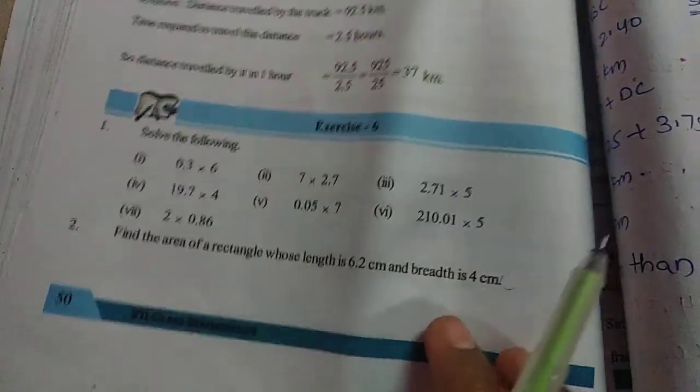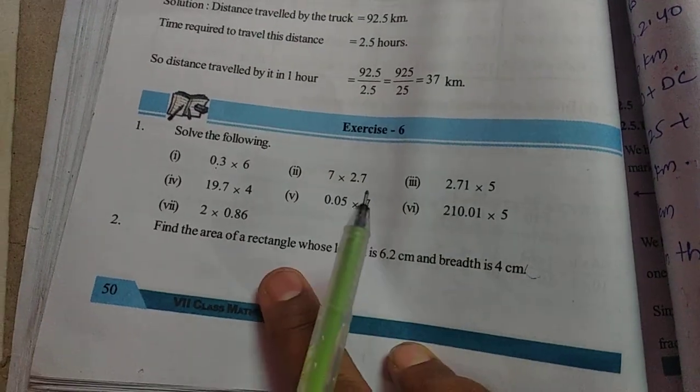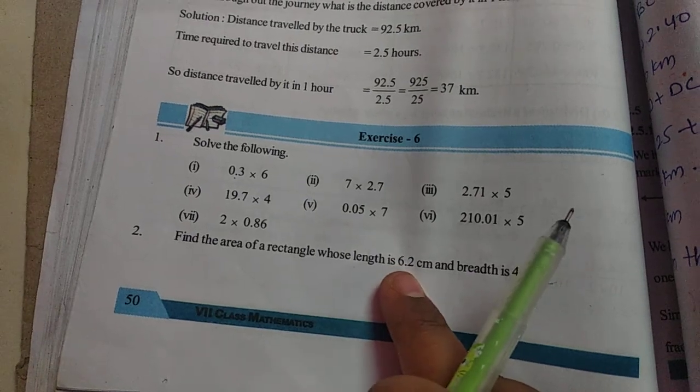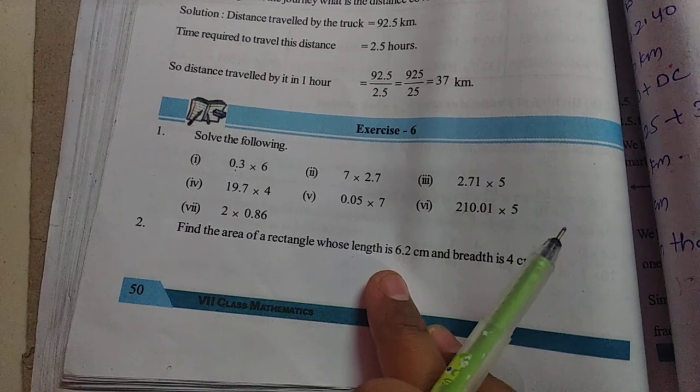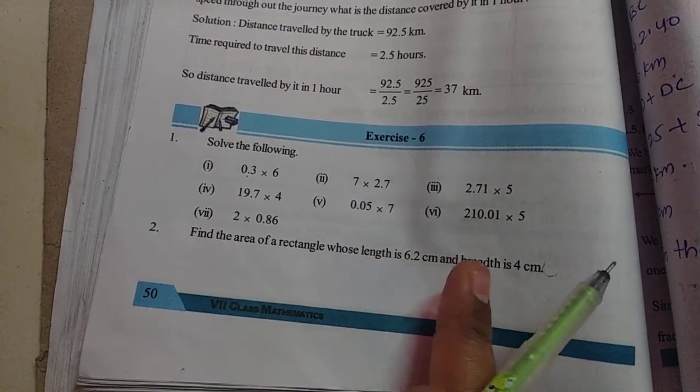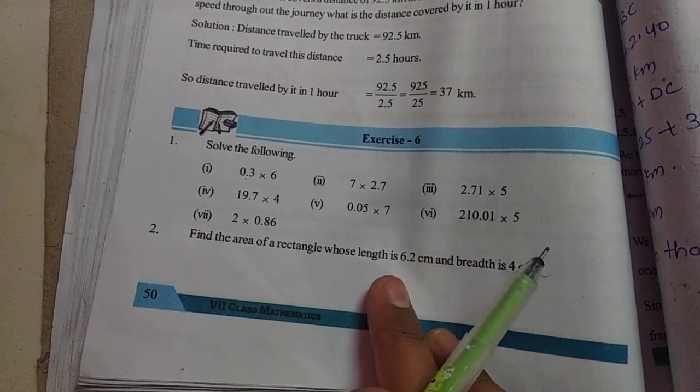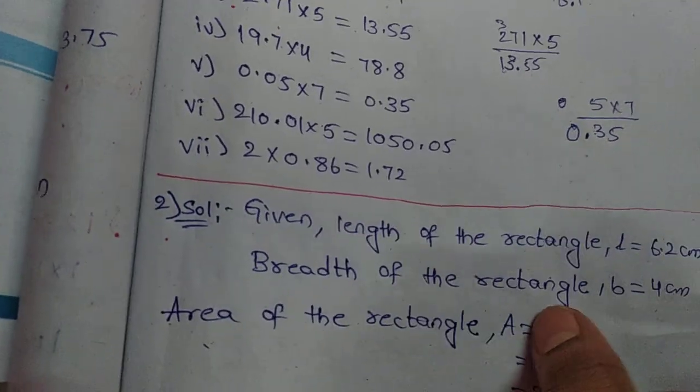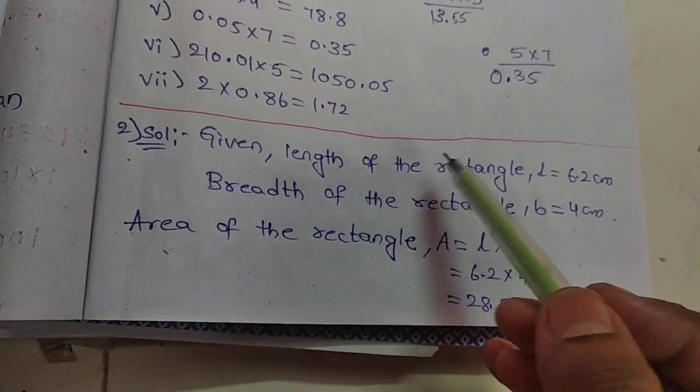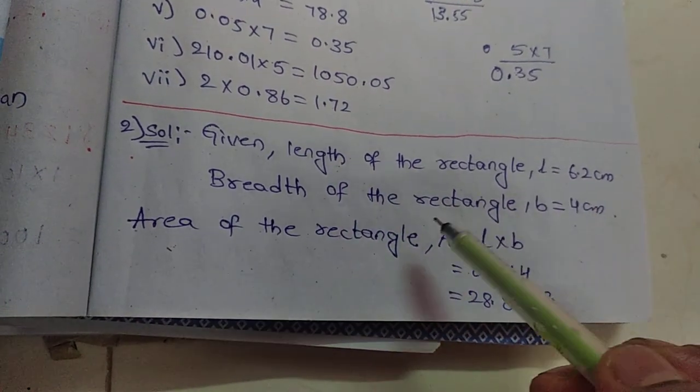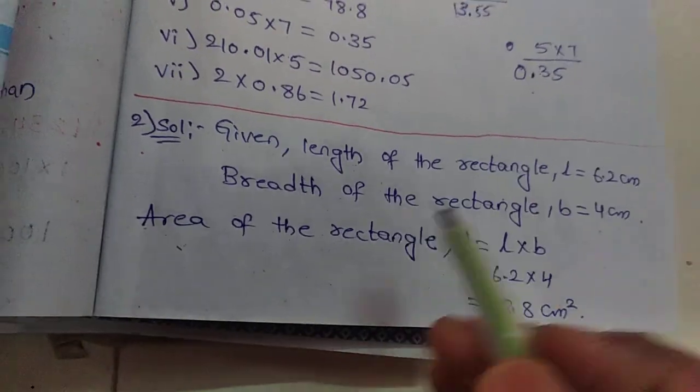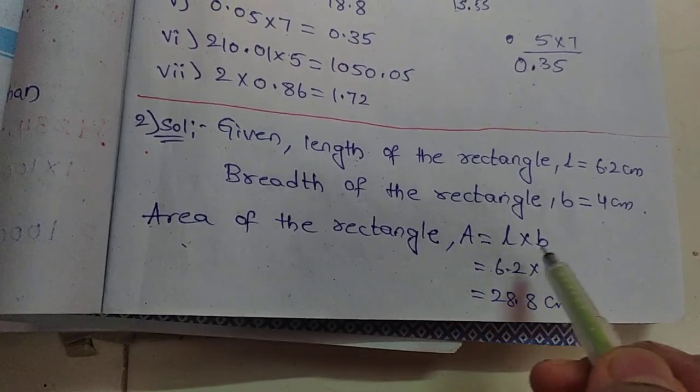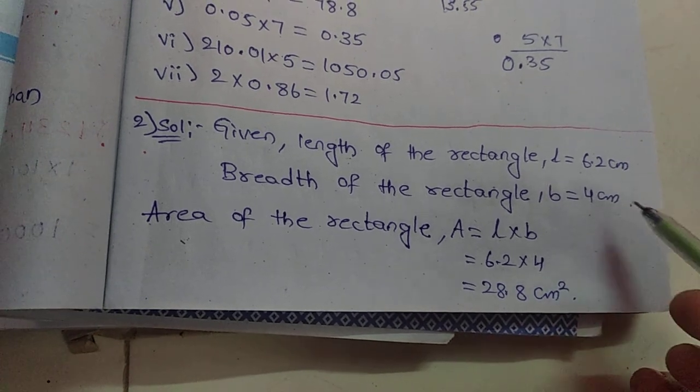Second problem: find the area of a rectangle whose length is 6.2 centimeters and breadth is 4 centimeters. We need to find the area of the rectangle. They have given length and breadth. The area of the rectangle formula is L into B. Given: length L equals 6.2 centimeters and breadth B equals 4 centimeters. Area of the rectangle A equals L into B, length into breadth.